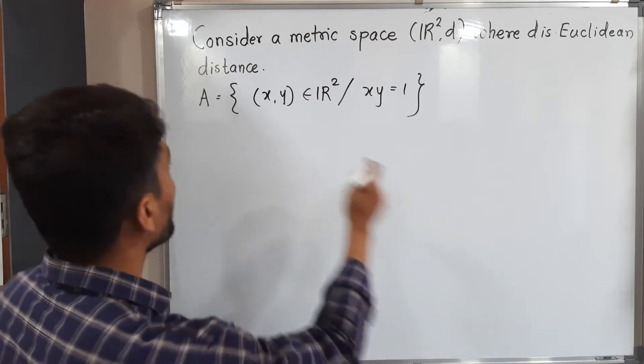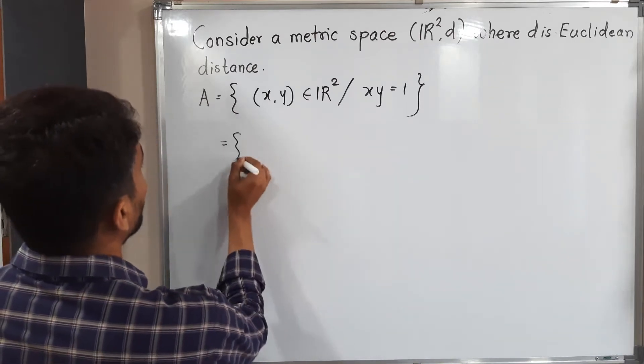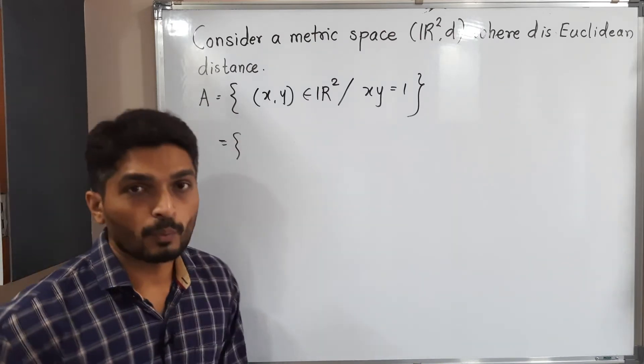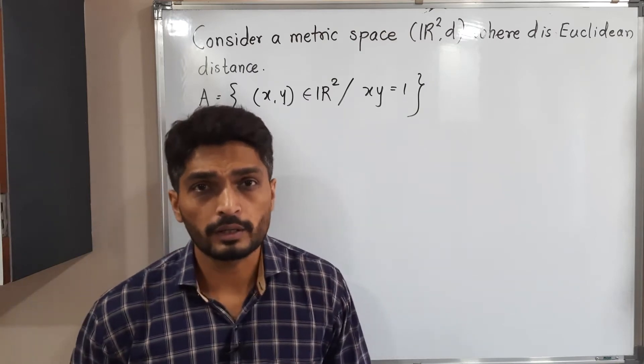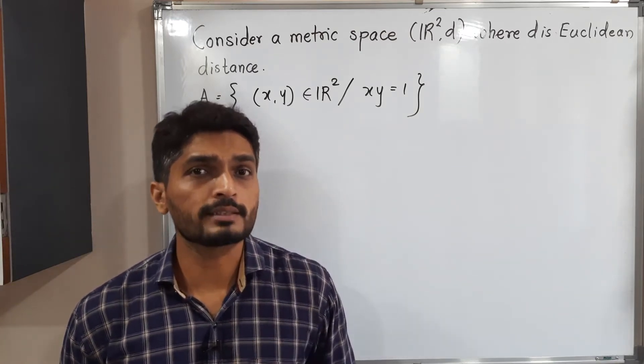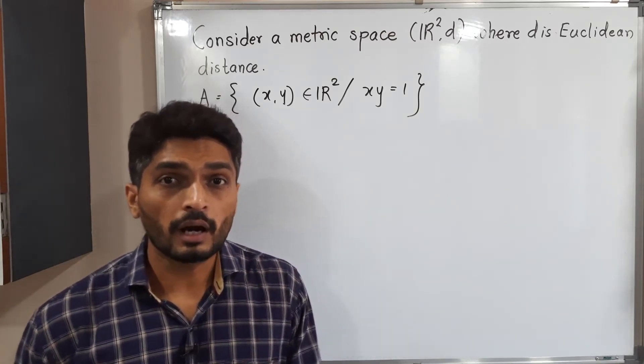We have one set A and we have to check whether this set A is connected or disconnected. Let us discuss this set. We have XY belongs to R² where X into Y is equal to 1. Do you know this is equation of what? This is equation of rectangular hyperbola.